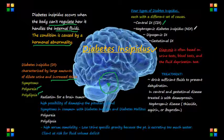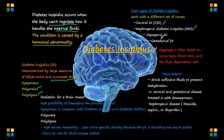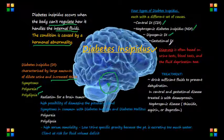The next type is nephrogenic diabetes insipidus, which occurs when the kidneys and nephrons don't respond properly to the antidiuretic hormone vasopressin.